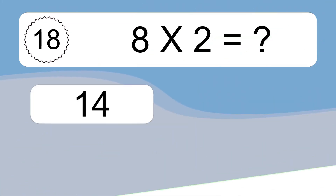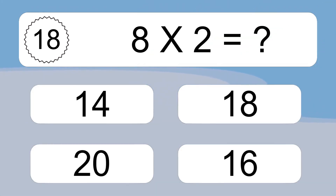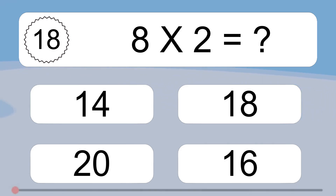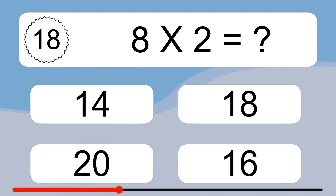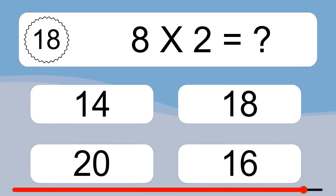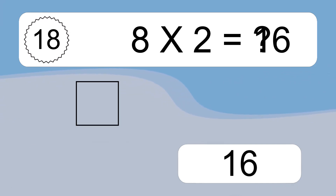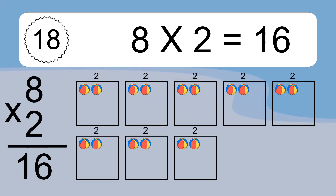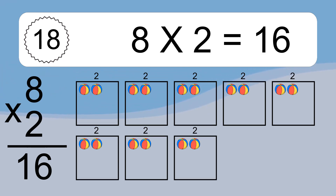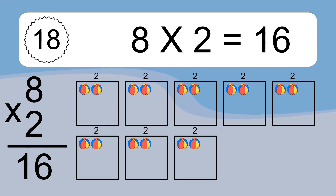8 times 2 equals what? 8 times 2 equals 16. We have 8 boxes, and each box has 2 colorful balls inside. If you count all the balls in all the boxes together, you will have 8 times 2 balls. This equals 16 balls.